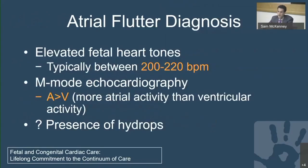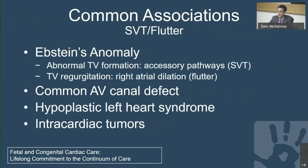For diagnosis, finding a heart rate of 200 to 220 on M-mode, you'll almost always see more A's than V's — meaning the atrium is driving the arrhythmia independently of what the ventricle is doing. We also want to know about hydrops. Associations of both SVT and flutter include Ebstein's anomaly, since with an abnormal tricuspid valve, accessory pathways can exist between the atrium and ventricle. With significant TR as seen in Ebstein's anomaly, the RA becomes large, which can beget flutter.